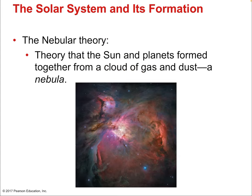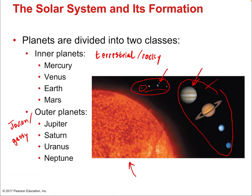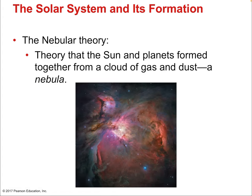The theory is that the sun and planets formed together from a cloud of gas and dust — a nebula. It's not like the sun came first and the planets came later. There was a swirling of gas and dust; due to the laws of physics, things crashed together, coalesced, and got pulled together by gravity. The sun was formed from most of the gas, and the leftovers formed everything else.